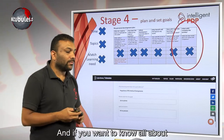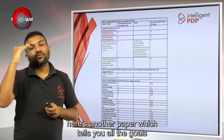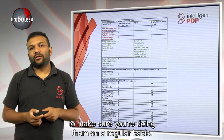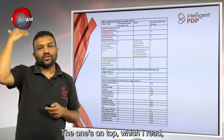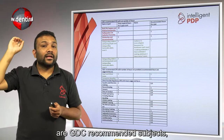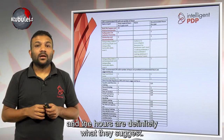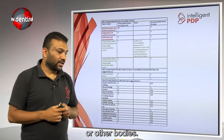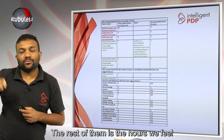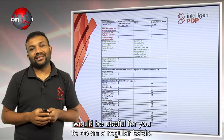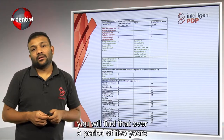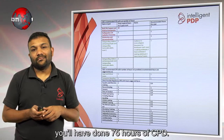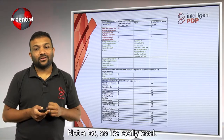If you want to know about all the other regulatory goals, here's a paper which tells you all the goals and roughly how many hours per year you should do to ensure you're doing them regularly. The ones in red are GDC recommended subjects and the hours are definitely what they suggest. The ones in green are also GDC recommended subjects but the hours have been suggested by other documents or bodies. The rest are hours we feel would be useful. Achieving all of this over five years means you'll have done 75 hours of CPD, leaving not a lot left to do.